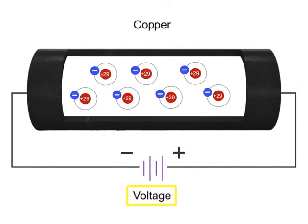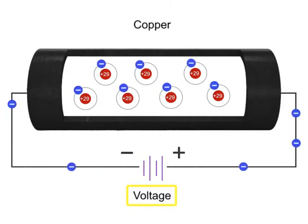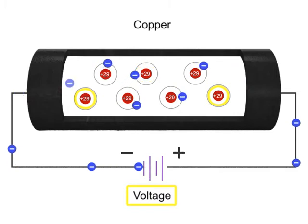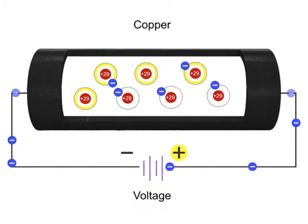When a voltage is introduced to the copper wire, the electrons can be directed through the wire with the electrons moving towards the positive end of the source voltage.